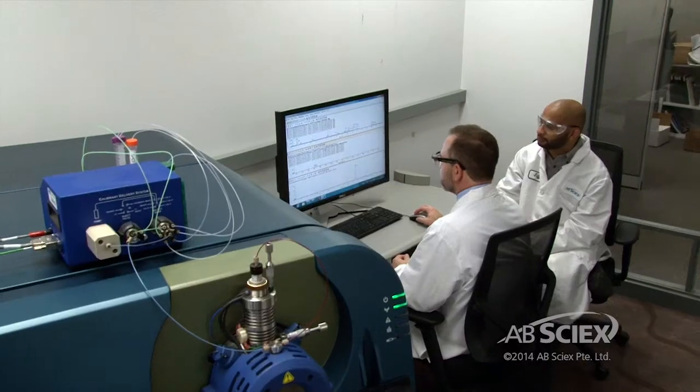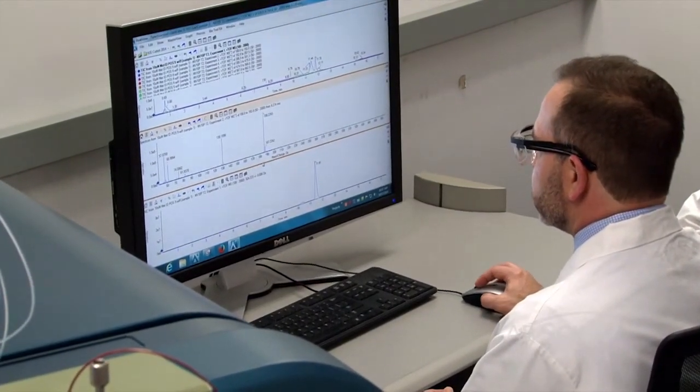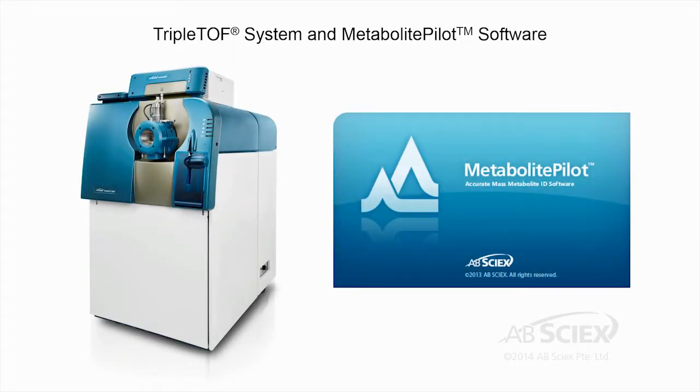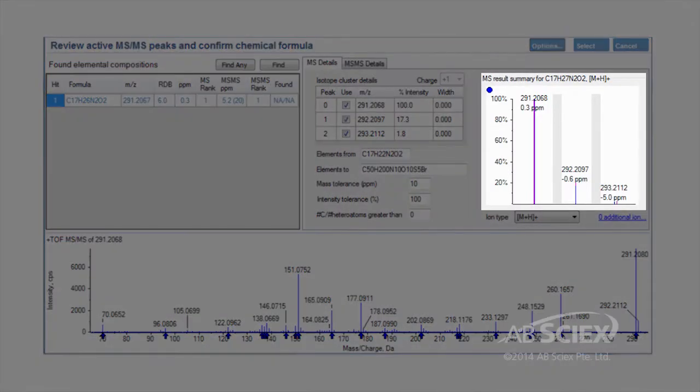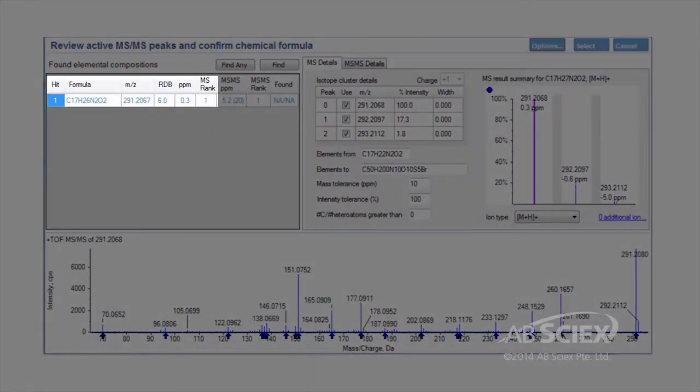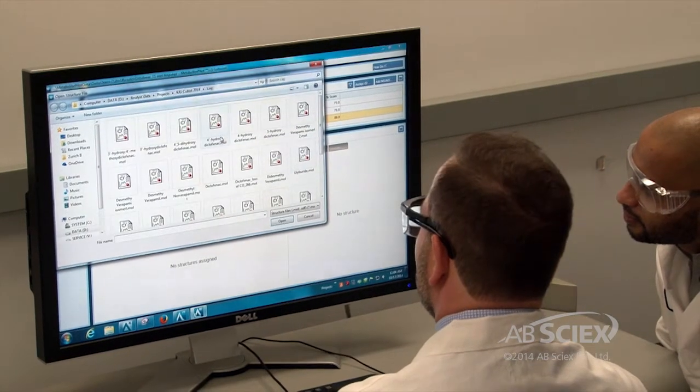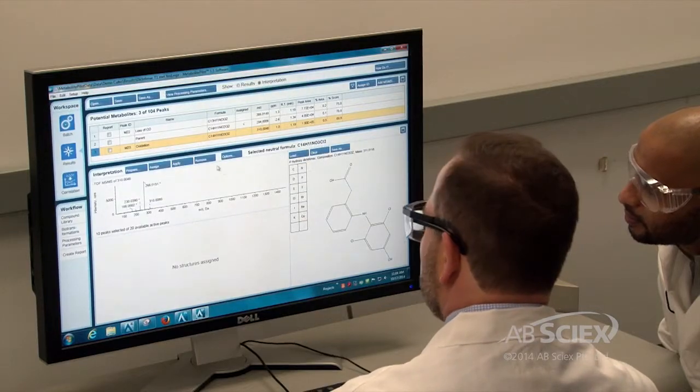AB SCIEX offers state-of-the-art hardware and automated software solutions to deliver met ID results with certainty. AB SCIEX provides multiple solutions for achieving metabolite ID characterization and analysis. The first is our triple TOF accurate mass high resolution platform along with MetabolitePilot software. When you need ultimate performance for unknown identification and structure confirmation, our triple TOF platform ensures a high level of confidence. MetabolitePilot software provides clear, simple data review for accurate mass data processing and interrogation.